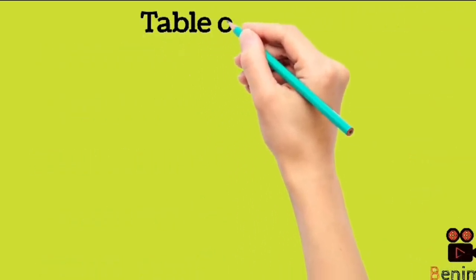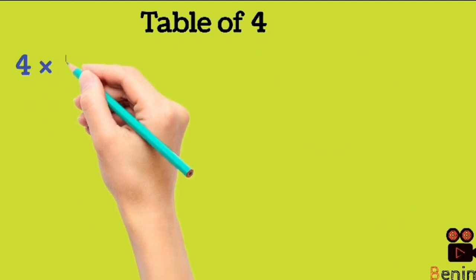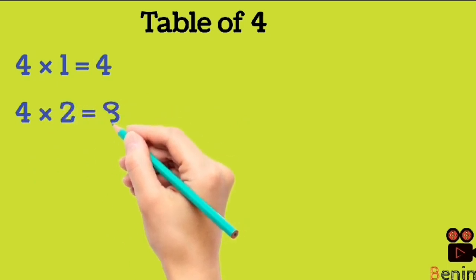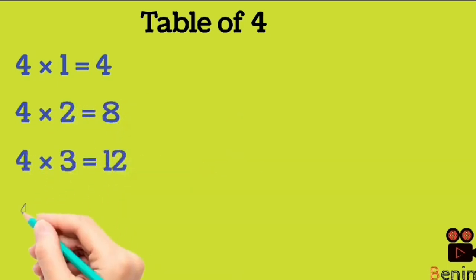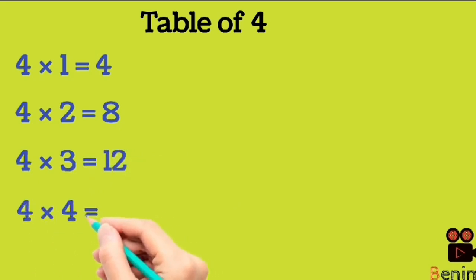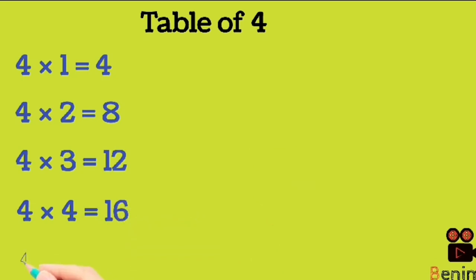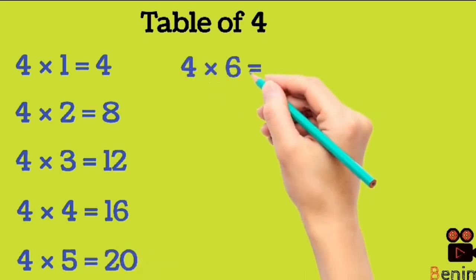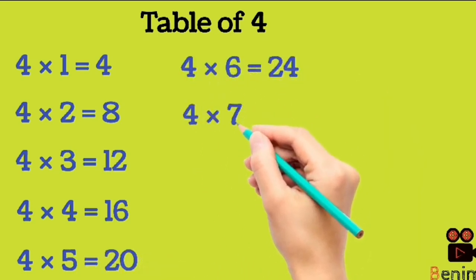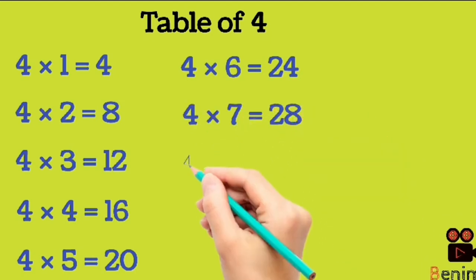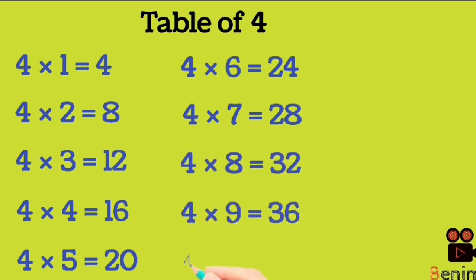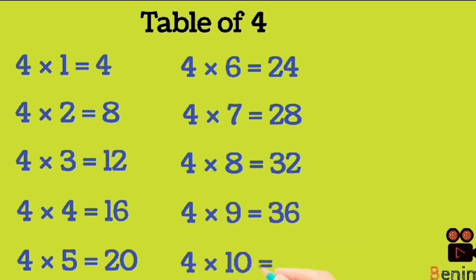Table of 4. 4 1s are 4. 4 2s are 8. 4 3s are 12. 4 4s are 16. 4 5s are 20. 4 6s are 24. 4 7s are 28. 4 8s are 32. 4 9s are 36. 4 10s are 40.